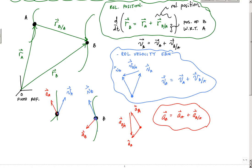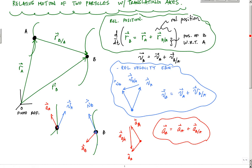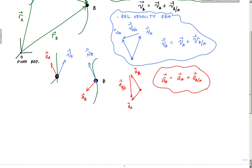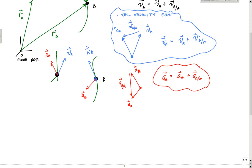The tools that become really important for calculating the relative velocity and acceleration of various particles are assembling this triangle — the velocity vector diagram and the acceleration vector diagram. If we don't want to use the vector forms of equations, we can simply use the law of cosines and law of sines.